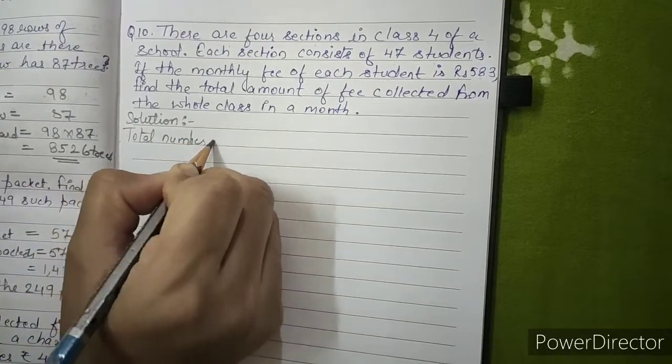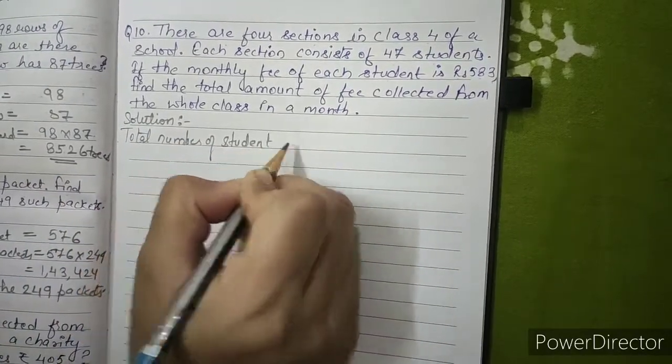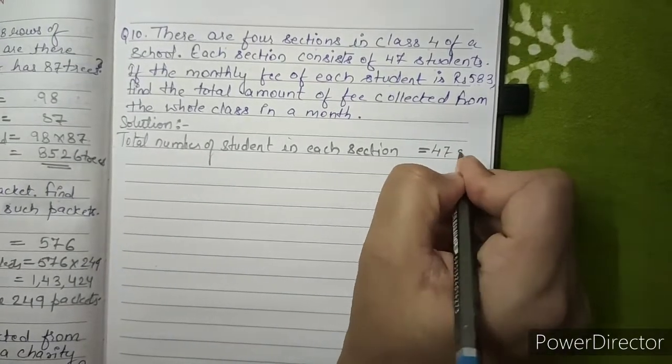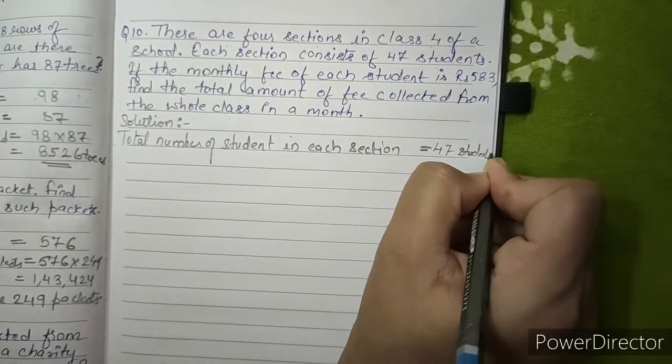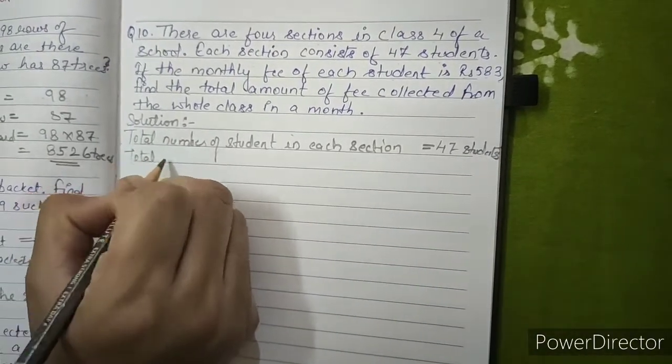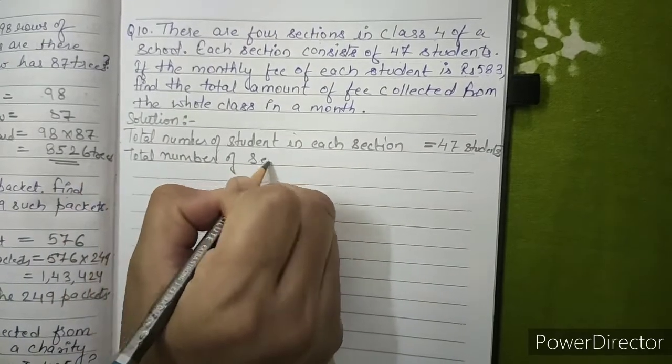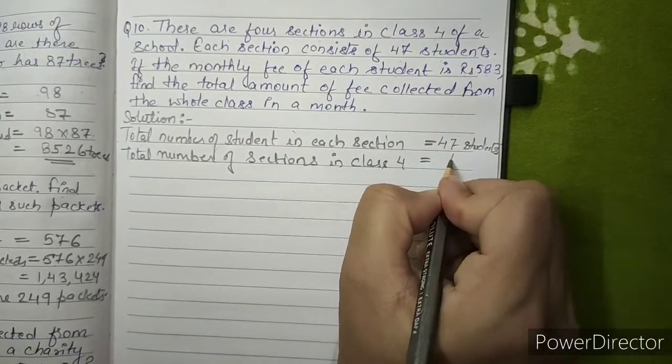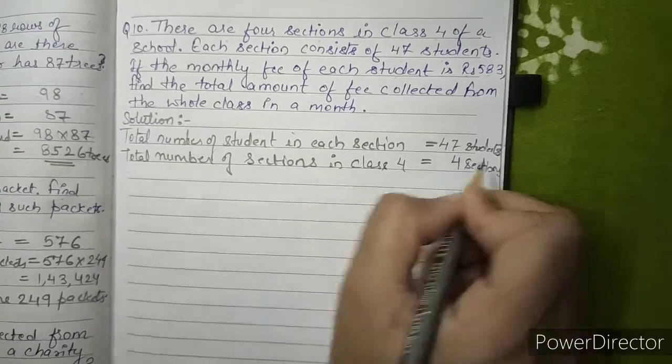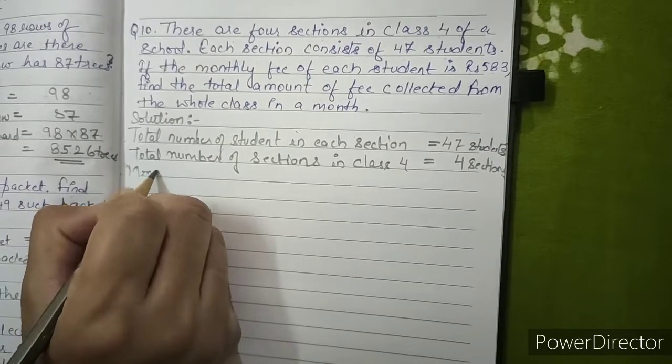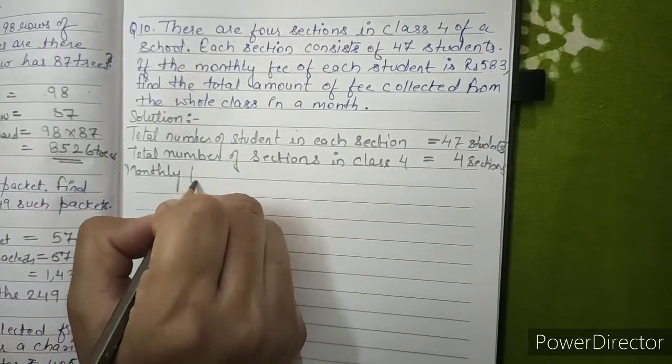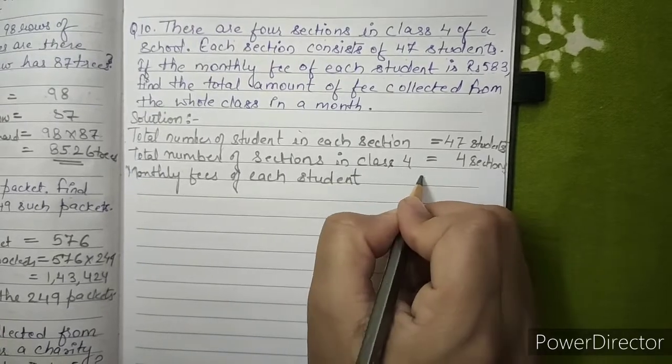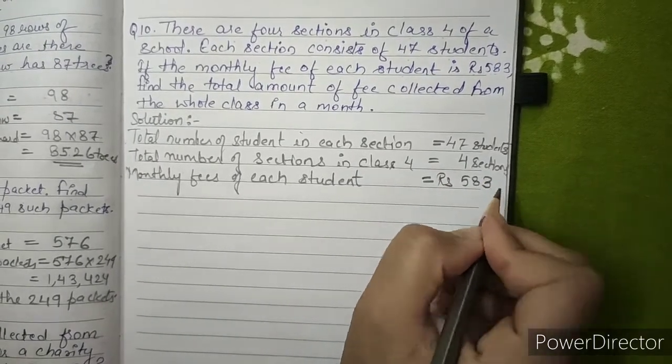Solution: Total number of students in each section equals 47 students. Total number of sections in Class 4 equals 4 sections.